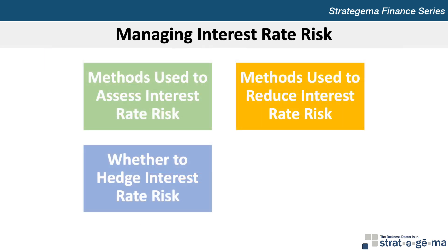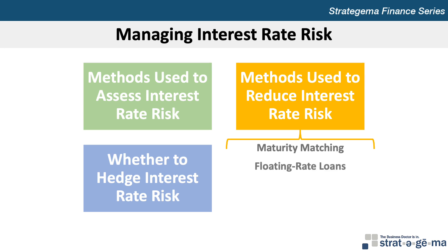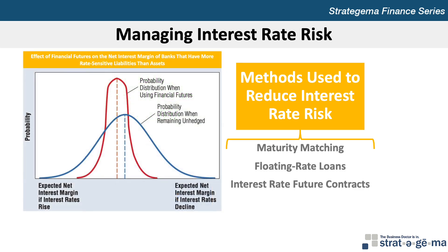Interest rate risk can be reduced by a number of methods. One obvious method is to match each deposit's maturity with an asset of the same maturity. An alternative solution is to use floating rate loans, which allow banks to support long-term assets with short-term deposits without overly exposing themselves to interest rate risk. Large banks frequently use interest rate futures and other types of derivative instruments to hedge interest rate risk. This exhibit illustrates how the use of financial futures contracts can reduce uncertainty about a bank's net interest margin. The sale of interest rate futures reduces the potential adverse effect of rising interest rates on the bank's interest expenses, yet also diminishes the potential favorable effect of declining interest rates on the bank's interest expenses. Assuming that the bank initially had more rate-sensitive liabilities, its use of futures would reduce the impact of interest rates on its net interest margin.